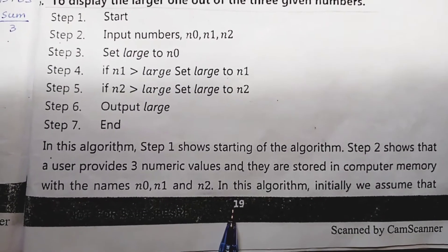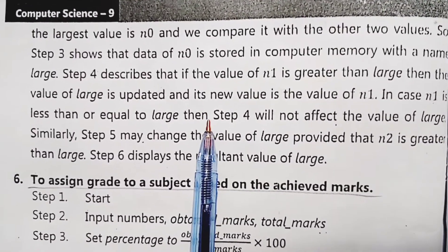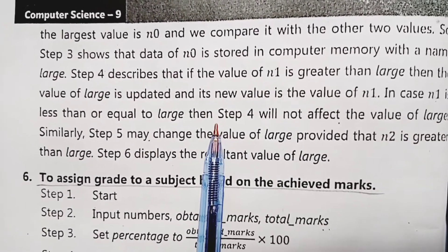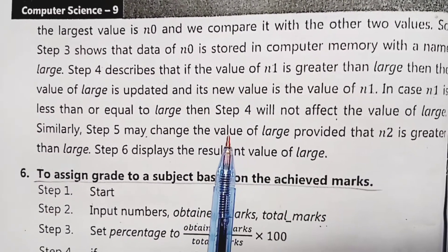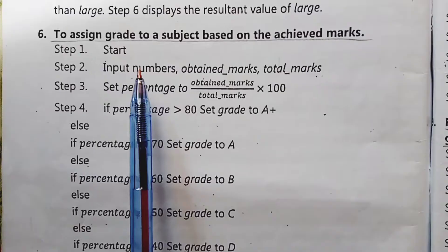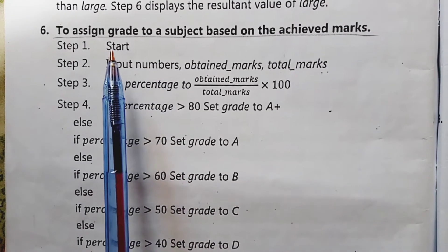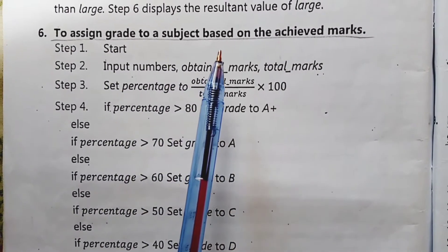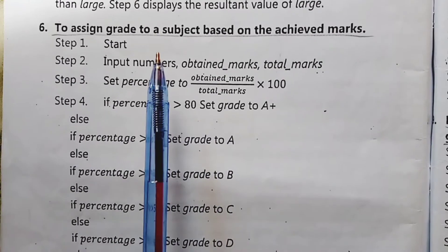Students, on page numbers 19 and 20, the description of algorithm number 5 is given — we have already discussed this. Next, example number 6 is to assign a grade to a subject based on the achieved marks.